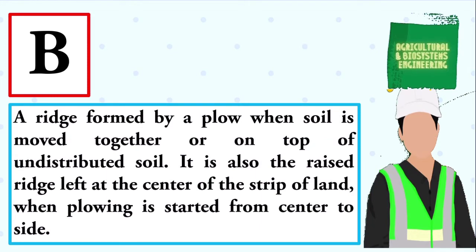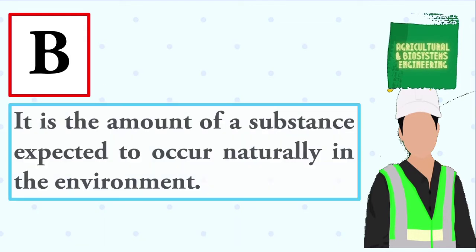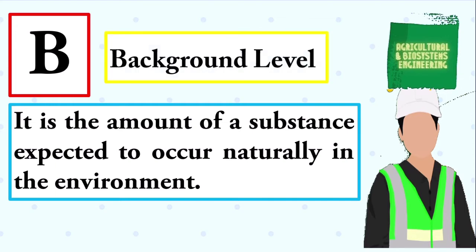A ridge formed by a plow when soil is moved together or on top of undistributed soil. It is also the raised ridge left at the center of the strip of land when plowing is started from center to side. The answer is: backflow. It is the amount of a substance expected to occur naturally in the environment. The answer is: background level.